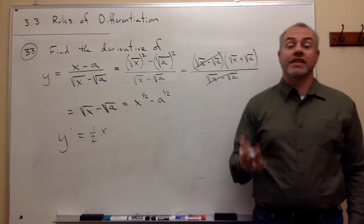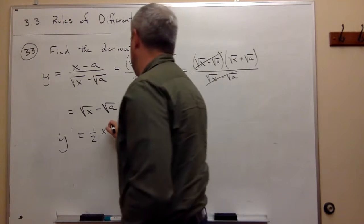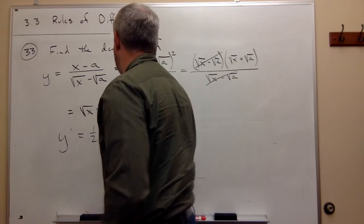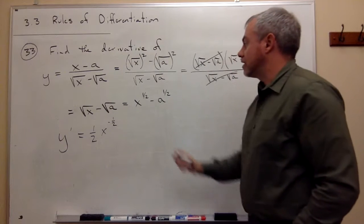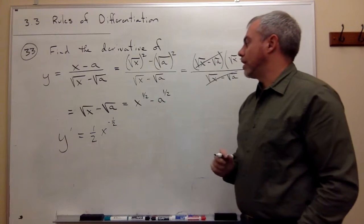Well, 1 half minus 1 is negative 1 half. So we get to the minus 1 half power. And so that's the derivative of x to the 1 half.